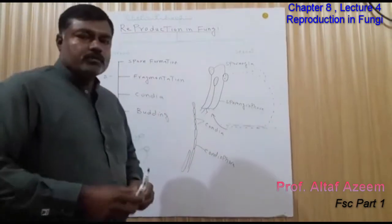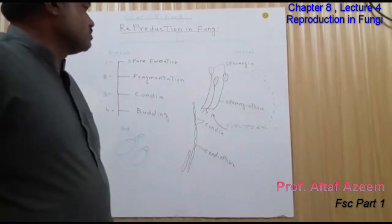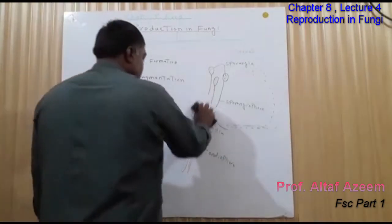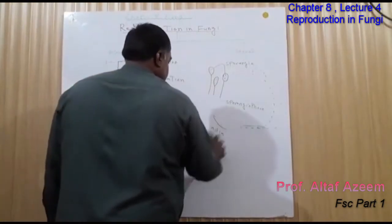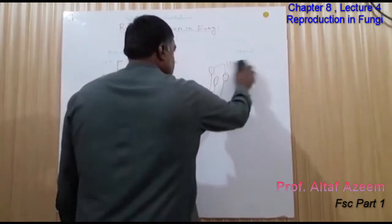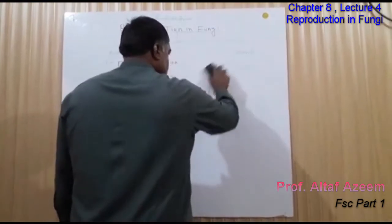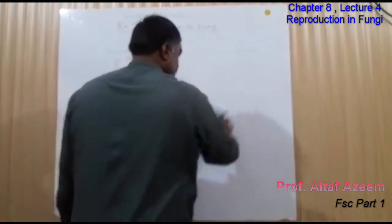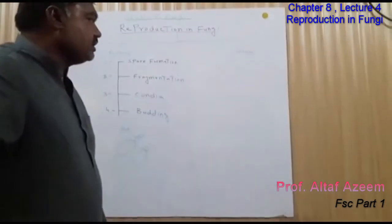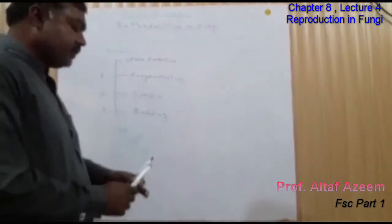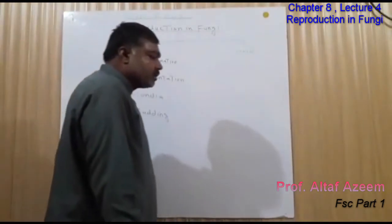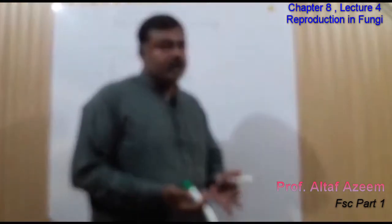Now we look at how sexual reproduction takes place in fungi. Different fungi have different methods of sexual reproduction. The common method involves the fusion of nuclei.